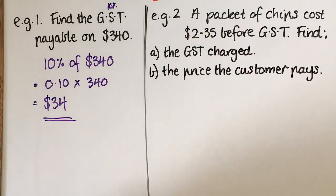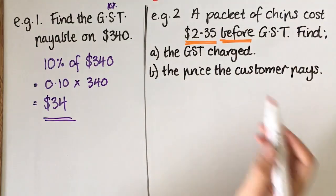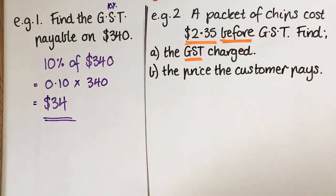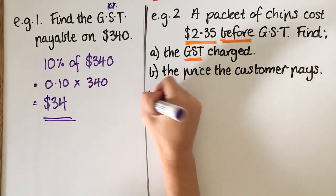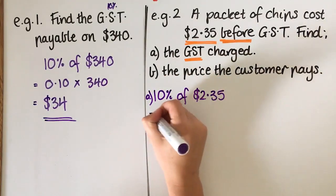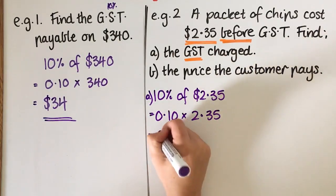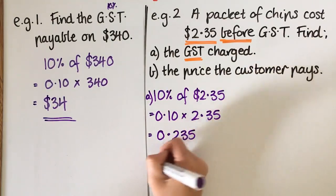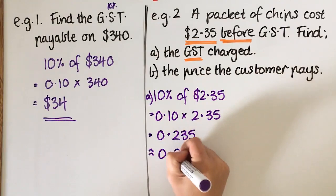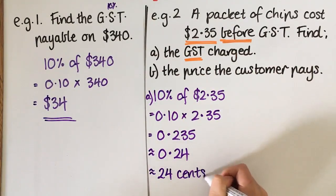All right, so for this question, a packet of chips costs $2.35 before GST. Find the GST charged. Okay, so the first thing we need to do is find the GST. So to do that it's 10% of $2.35, which is 0.10 times $2.35. Now I know that that's going to be 0.235, and if we're talking money I'm going to round that to 24. Okay, you can write it like that or you can say 24 cents.